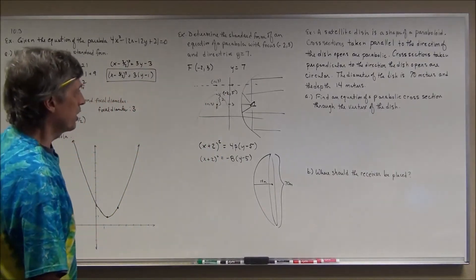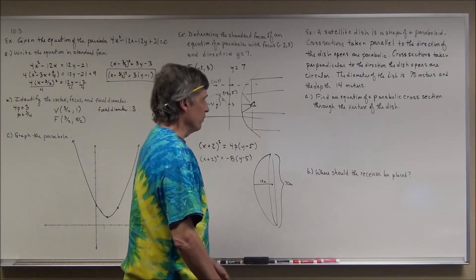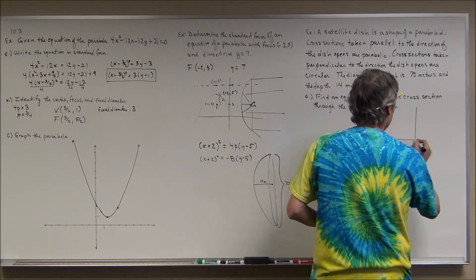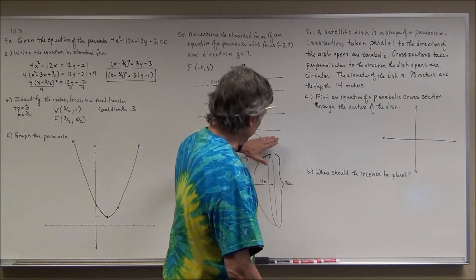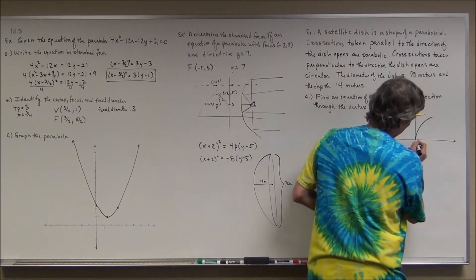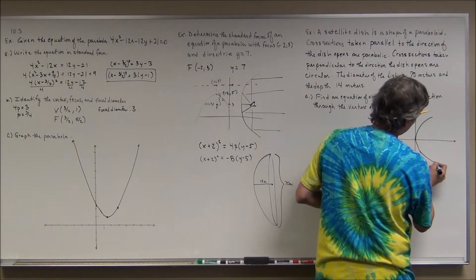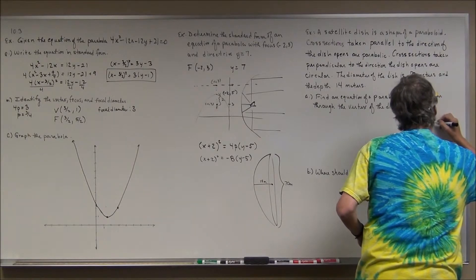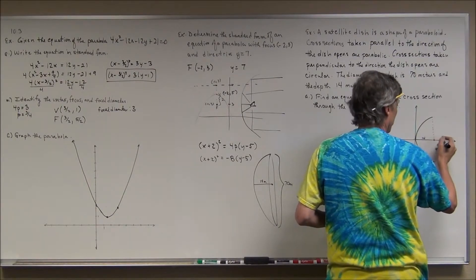We're going to find the equation of a parabolic cross section through the vertex of the dish. I'll place the vertex at the origin to make the setup convenient. Drawing the 2D cross-sectional shape opening to the right, the vertex is at (0, 0). The depth of the dish is 14 meters, so the deepest point goes out 14 units along the axis.